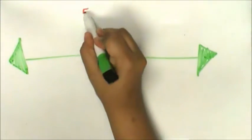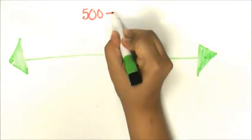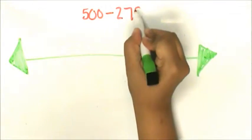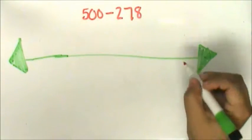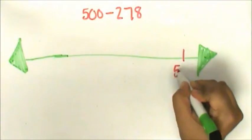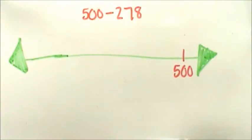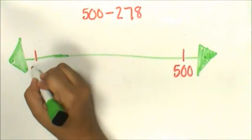To solve this problem I have to subtract 278 from 500. I'm going to use an open number line and addition for subtraction to solve this problem. Jessica had 500 buttons. She gave Kelly 278.